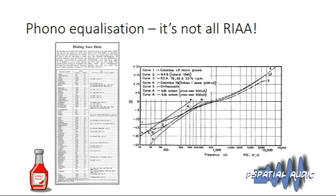In the 1950s there were tables in hi-fi magazines listing all the different labels and saying which equalization to select for each. There's a real one from a late-1950s hi-fi magazine shown here. It's my belief — and that of many others — that a lot of these equalizations continued much longer than people think. There's an idea that in 1955 everybody suddenly adopted RIAA, but I don't think that's true — there are records from much later that seem to benefit from other equalizations.